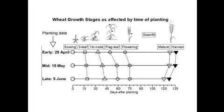But the opposite is the case for reaching maturity. When we plant early, the grain fill period is longest because the grain filling period occurs in July and early August when the temperatures are relatively cool, and so the grain filling period is long.